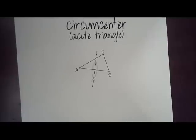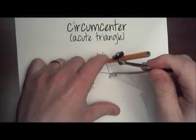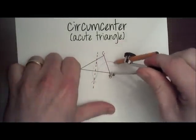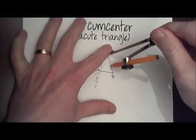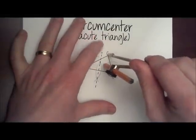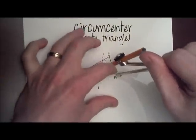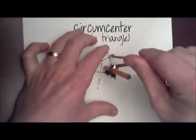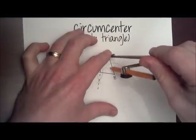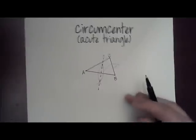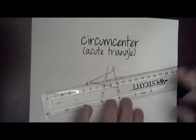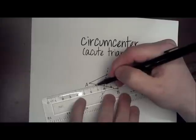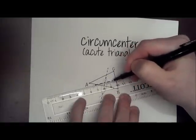I'll now construct the perpendicular bisector of side BC. Make sure I'm open more than halfway, and we're going to draw a football over here — one side and the other side. Oh, compass moved. Don't want to do that; you aren't going to get a good perpendicular bisector. There we go. Now, between those two points of intersection, we will draw another dotted line indicating the perpendicular bisector of segment CB.